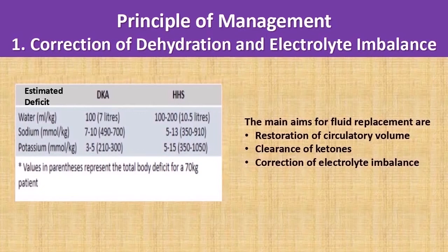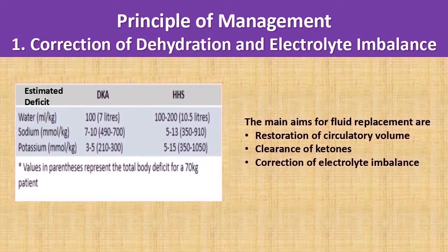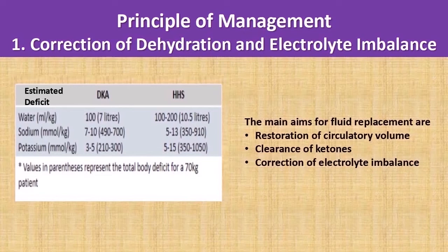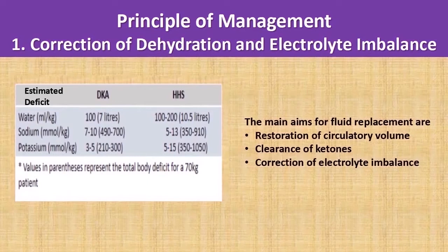Even though the management of DKA and HHS are almost similar, there are some important clinical differences I will highlight as we go along. The first step in management is fluid resuscitation and correction of electrolyte imbalance. Both DKA and HHS subjects are in a dehydrated state on presentation. The fluid deficit for a DKA subject is generally believed to be 10% of body weight — so in a 70 kg subject, the volume to replace is around 7 litres.